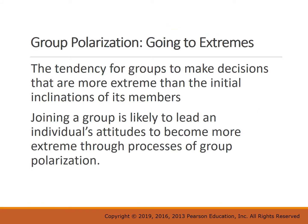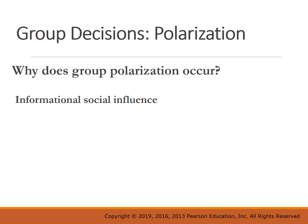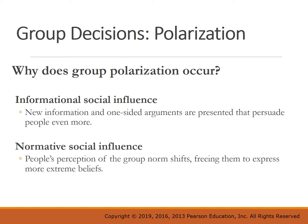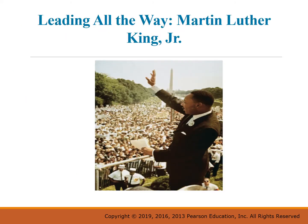Why does group polarization happen? It is the tendency for groups to make decisions more extreme than the initial inclinations of members. There's informational social influence at work — people seeking information from other group members, and one-sided arguments from group members persuade people even more than before. We also have normative social influence at work, where people's perceptions of group norms shift and they feel free to express more extreme beliefs.